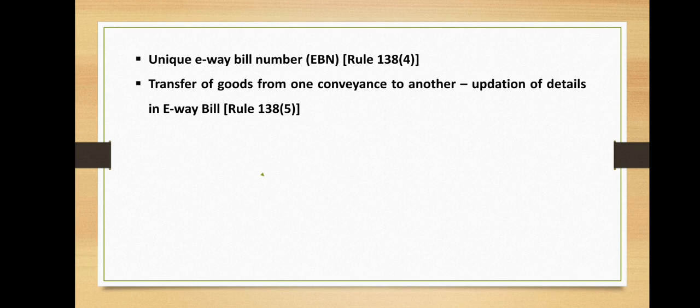Transfer of goods from one conveyance to another — updation of details in e-way bill, as per Rule 138 clause 5: where the goods are transferred from one conveyance to another, the consigner or the recipient who has provided the information in Part A, or the transporter, shall before such transfer and further movement of goods update the details of conveyance in Part B of the e-way bill on the common portal.